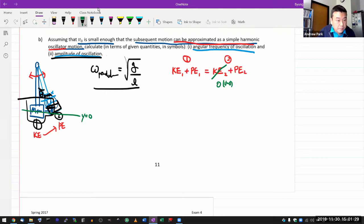Kinetic energy at point 2 plus potential energy at point 2. So kinetic energy at point 2 is going to be 0, that's the maximum height, that's where velocity is equal to 0.